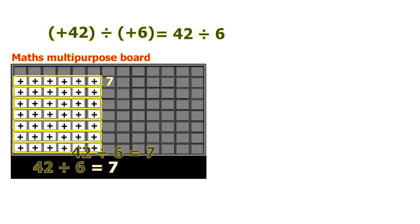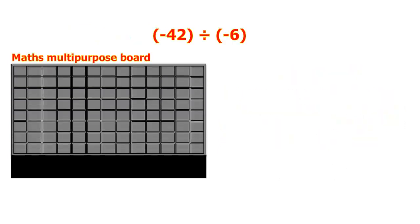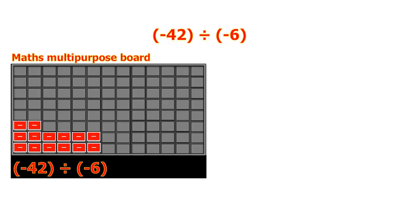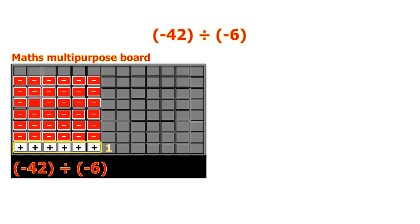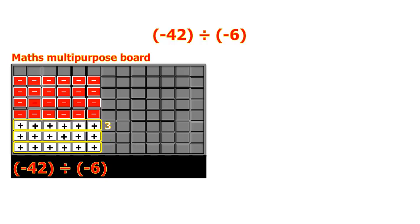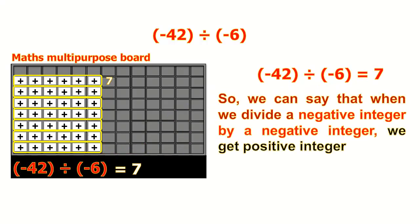Positive integer divided by positive integer gives positive. Minus divided by minus gives us positive.